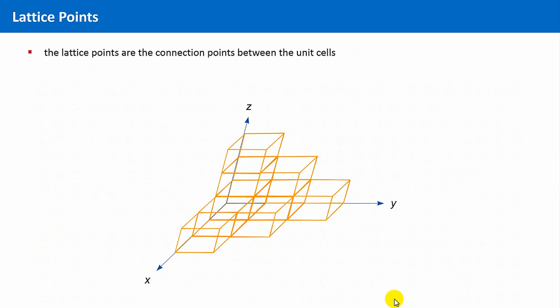What does such a lattice point represent? You can think of it as a connection point between neighboring unit cells. This means, place a lattice point at every corner of every unit cell.